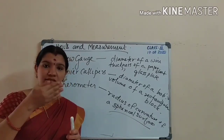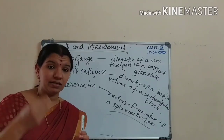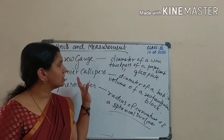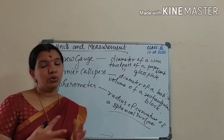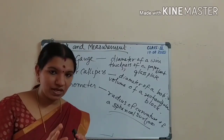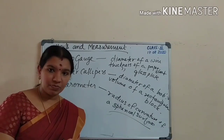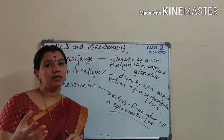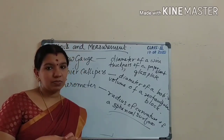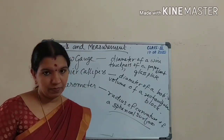For distances beyond 10² meters we use the parallax method, which can even measure the distance of a planet from Earth. For very small lengths below the measurable range, we use microscopes. This is all about the measurement of length.